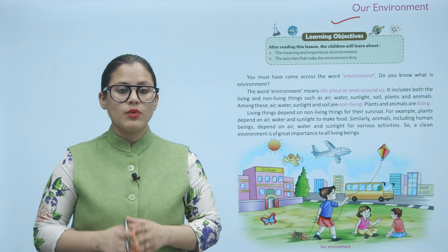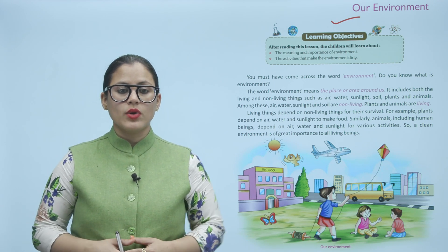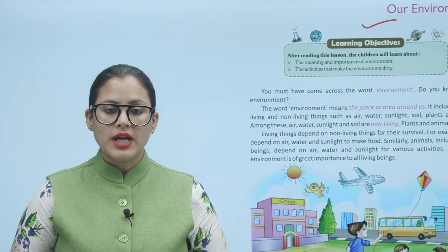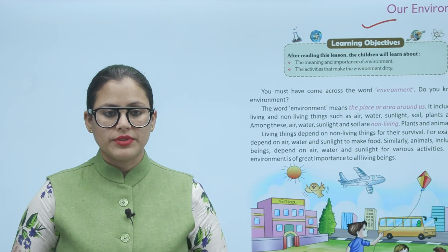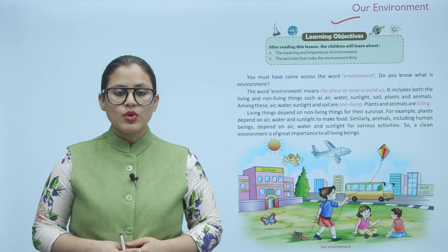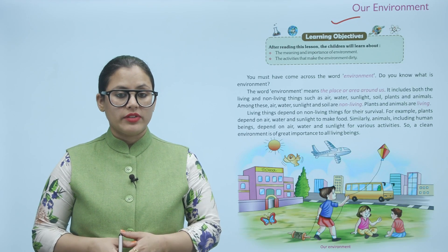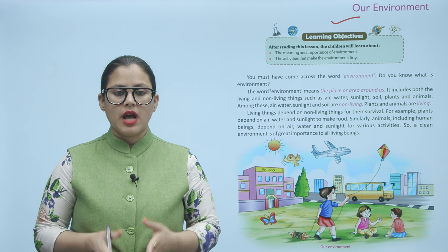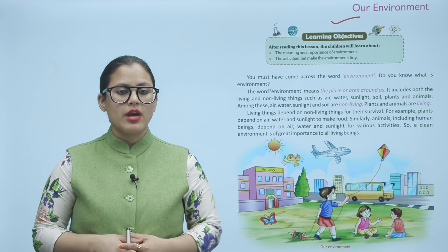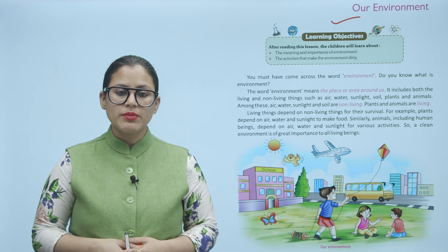Among these, air, water, sunlight and soil are non-living. Plants and animals are living. Living beings depend on non-living things for their survival. For example, plants depend on air, water and sunlight to make food.